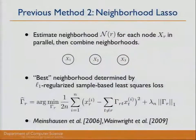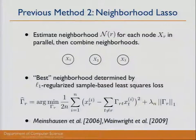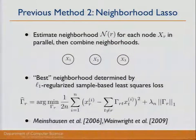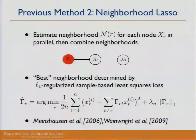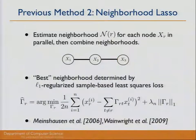The second method is neighborhood lasso. Similar to G lasso, this uses L1 regularization. However, rather than estimating the global model, neighborhood lasso estimates the neighborhood for each random variable individually using an L1 regularized sample-based least squares loss. It begins with node one, estimates its neighborhood, then node two, then node three, and combines these neighborhoods for the overall structure estimate.